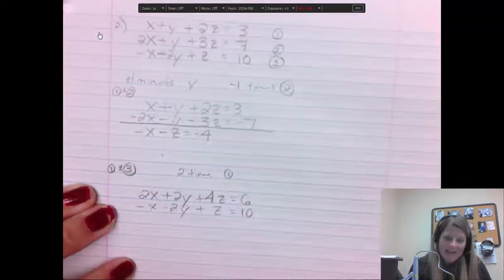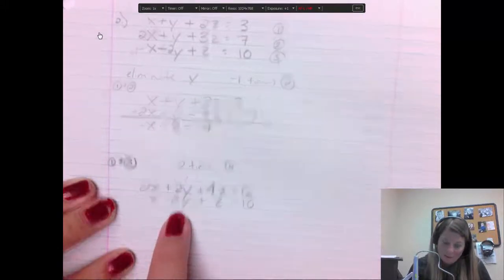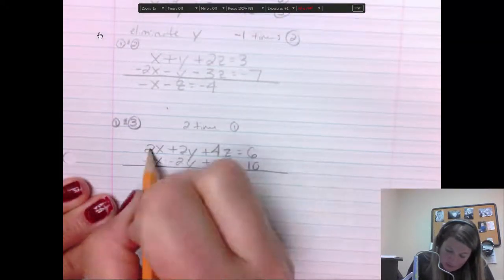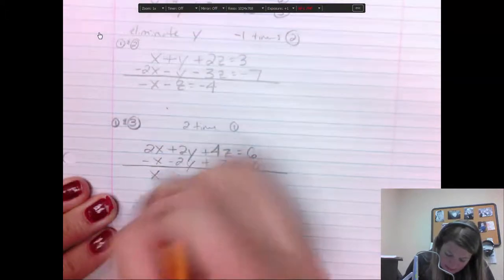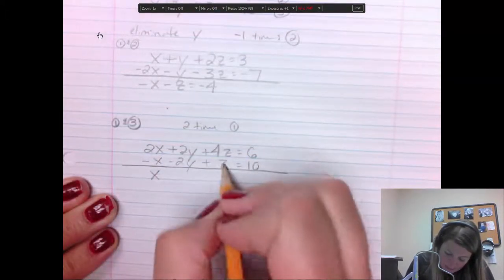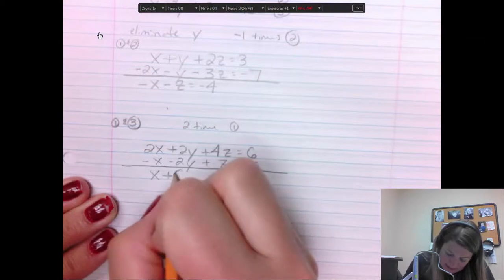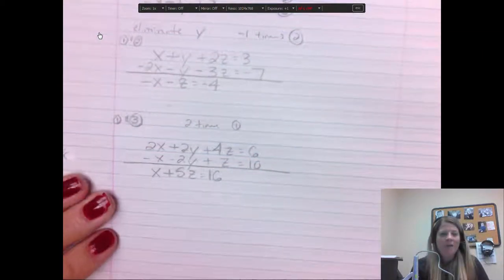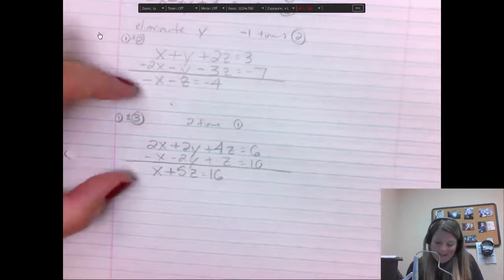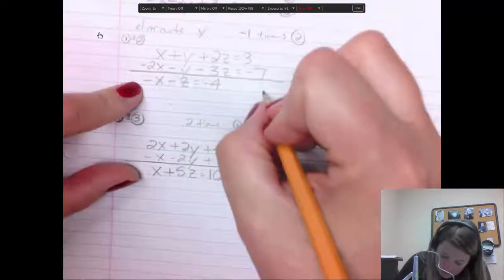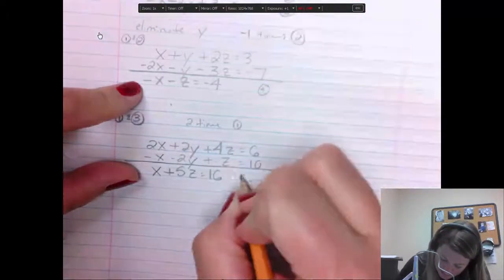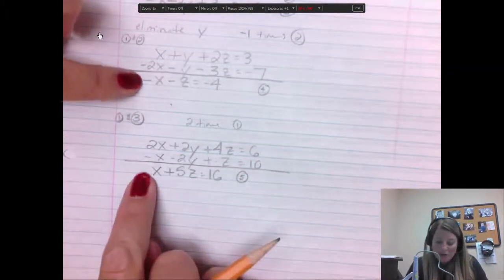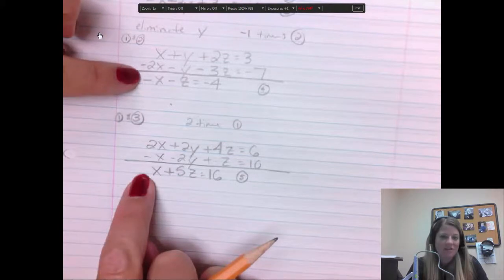And then I have to write that down as I go. So 2 times x, 2x. 2 times y, 2y. 2 times 2 is 4z. 2 times 3 is 6. Okay, there's my first equation. Now the third one is negative x minus 2y plus z equals 10. Now I can add because I'll get that 0 there on the y that I wanted. 2 minus 1 is 1x. Those ones eliminate. 4 plus 1 is 5z. 10 and 6 is 16.